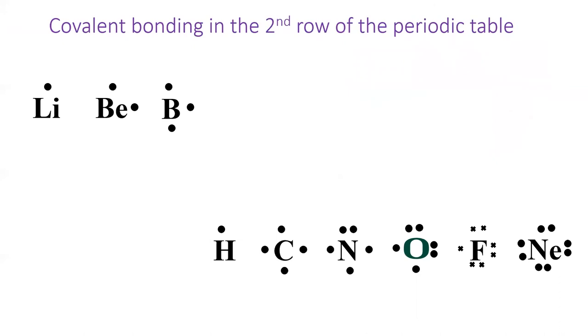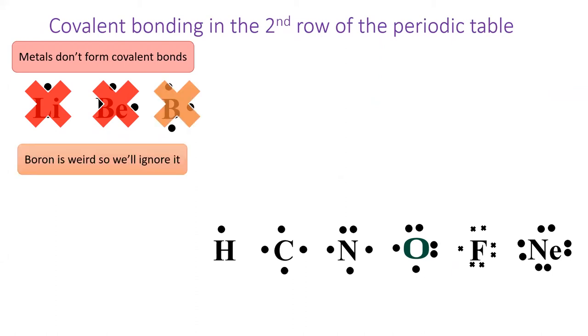Let's take a closer look at the elements of the second row of the periodic table, and also hydrogen. The metals lithium and beryllium don't form covalent bonds, so we will exclude them. And while boron forms covalent bonds, it's a bit weird, so we'll skip over that for now.